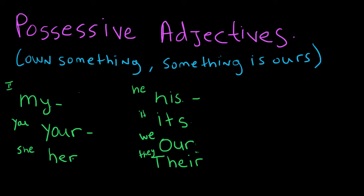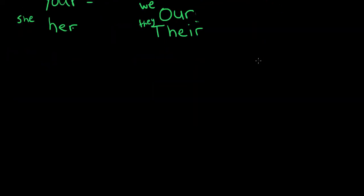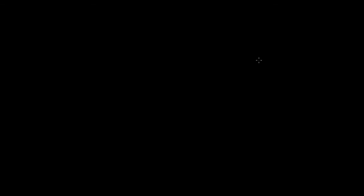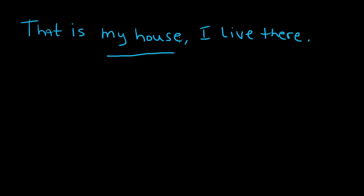Let's look at some examples of how we use possessive adjectives in sentences. When you want to say that something is yours or it belongs to you, you can say: That is my house. I live there. So that means the house belongs to you. You possess it.